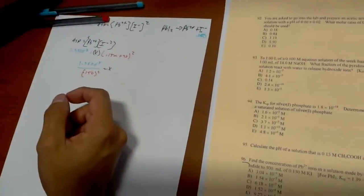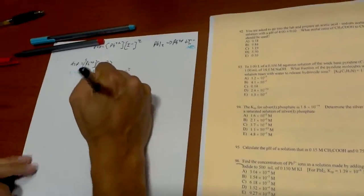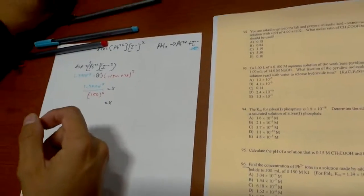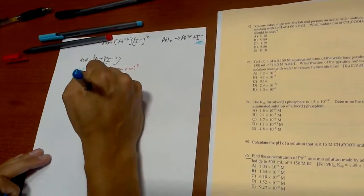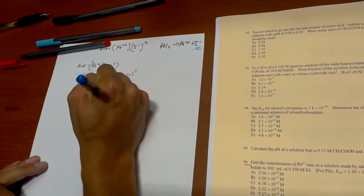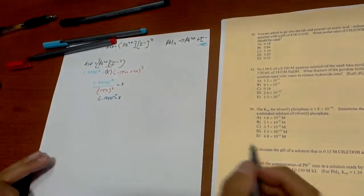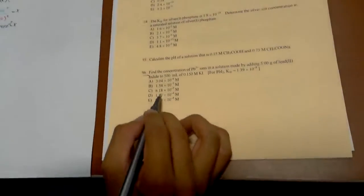Now if we solve for it, this is going to equal 6.18 times 10 to the negative 7, and if we look over, the one that matches is the letter C.